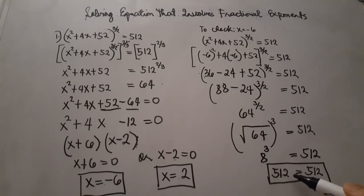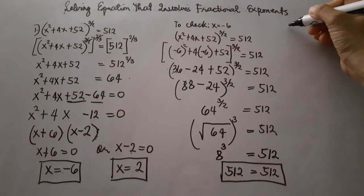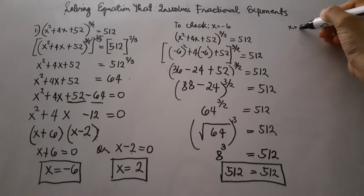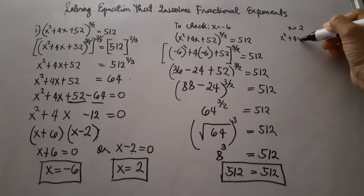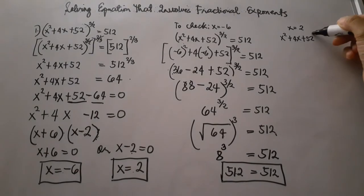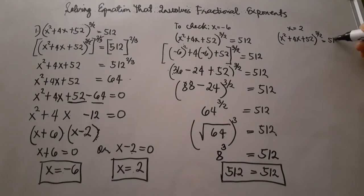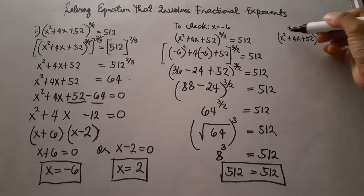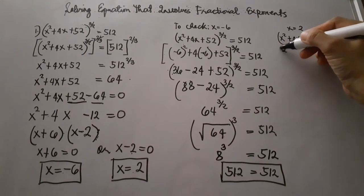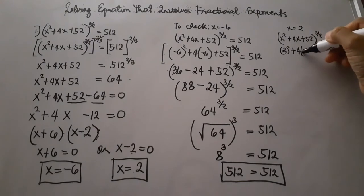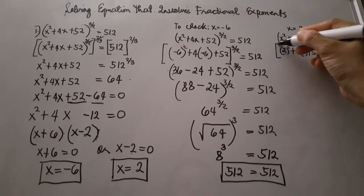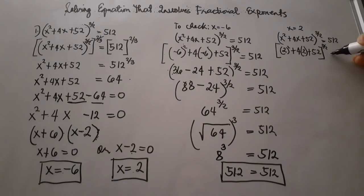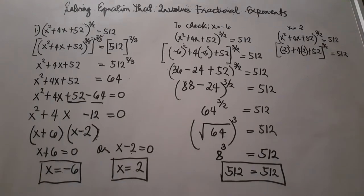Now we check x equals 2 as well. We substitute x equals 2 into the given equation: x squared plus 4x plus 52, raised to the power of 3 halves, is equal to 512. So we have 2 squared plus 4 times 2 plus 52, raised to the power of 3 halves, is equal to 512.